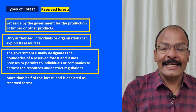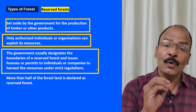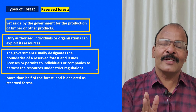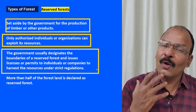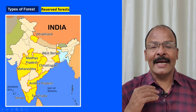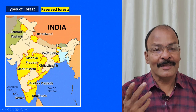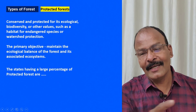The government designates the boundaries of reserve forest, issues licenses, and only those with licenses can cut trees. Half of India's forest is counted as reserve forest. States with significant reserve forests include Kerala, Tamil Nadu, Andhra Pradesh, Maharashtra, Chhattisgarh, Madhya Pradesh, West Bengal, Uttarakhand, and Jammu and Kashmir. Madhya Pradesh has 75 percent of its area under forest.